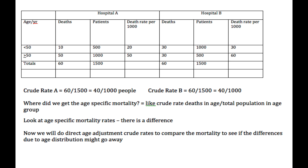Let's do a review of age adjustment, this time using pooled population from the two populations of comparison. In this we have Hospital A and Hospital B. There are two age groups: less than 50 and greater than 50 years of age.